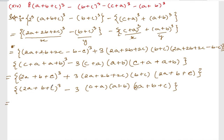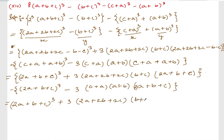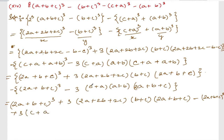Now if I open the bracket — while opening the bracket the minus sign is here, I missed that. So if I open the bracket it will be (2a plus b plus c) whole cube, plus 3 times (2a plus 2b plus 2c)(b plus c) times (2a plus b plus c). After that, minus into this one: it will be minus (2a plus b plus c) whole cube. Minus into minus is plus 3(c plus a)(a plus b)(2a plus b plus c).